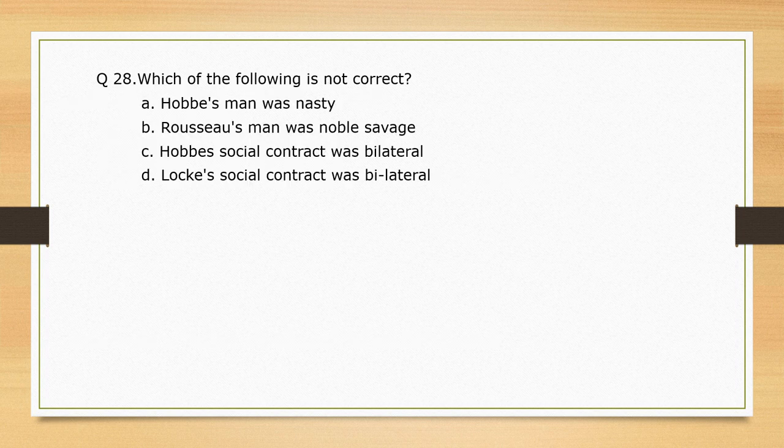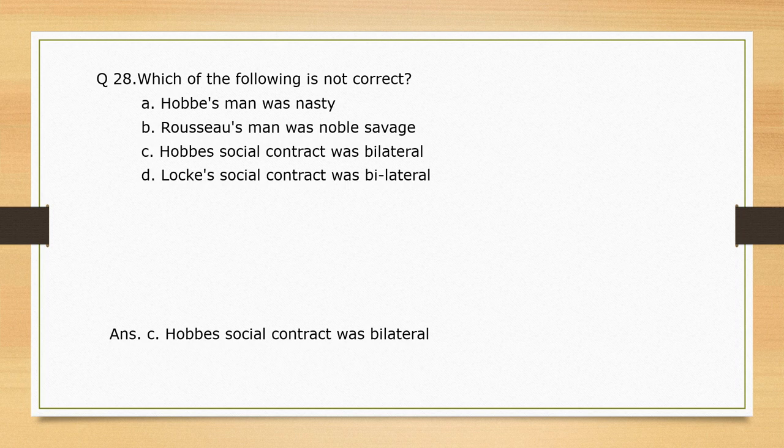Which of the following is not correct? Hobbes' man was nasty; Rousseau's man was noble savage; Hobbes' social contract was bilateral; Locke's social contract was bilateral. The correct answer is option C: Hobbes' social contract was bilateral — because you should know that Locke's social contract was bilateral, not Hobbes'.